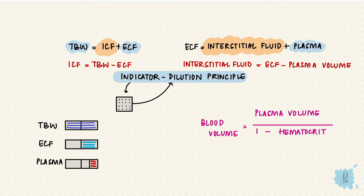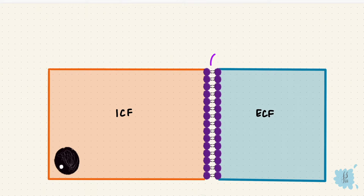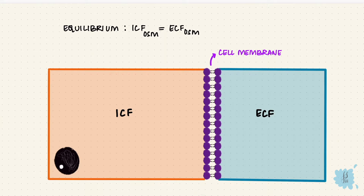The compartments have solutes and a solvent, and the solutions across the cell membrane have to be at equilibrium — the ECF osmolarity has to equal the ICF osmolarity. The cell membrane is semi-permeable: freely permeable to water but impermeable to most solutes. So if there's any imbalance, water will move across the membrane to bring back equilibrium — this movement of water is by osmosis.